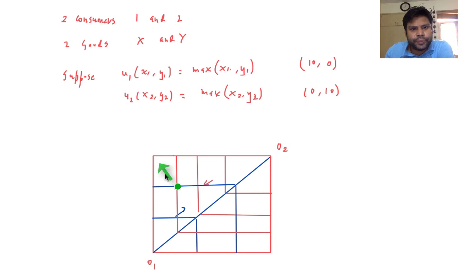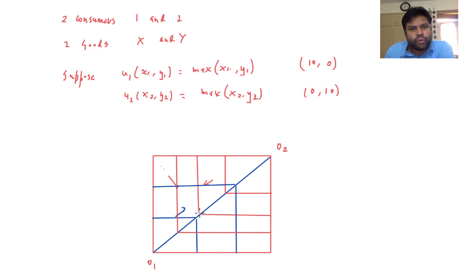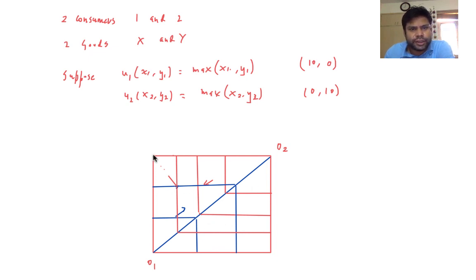Moving in this direction takes you to a higher indifference curve for both individual 1 and individual 2. This rules out any point in this part of the box, and by symmetry it also rules out any point in the other part of the box. We can also rule out points on the diagonal — moving from one point to another on the diagonal will improve the satisfaction level of both. So any point inside the box is inefficient.